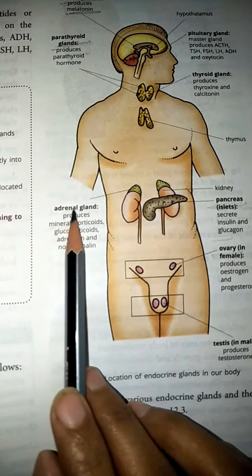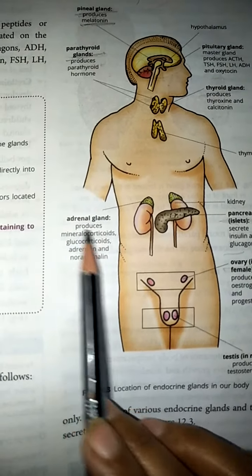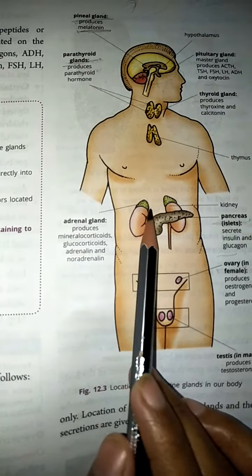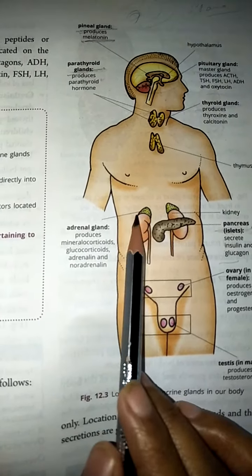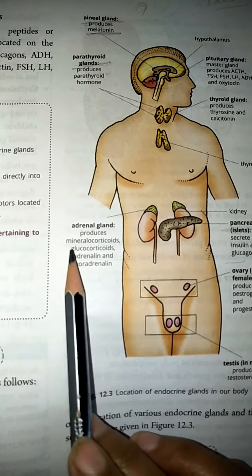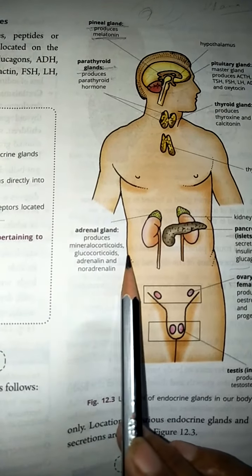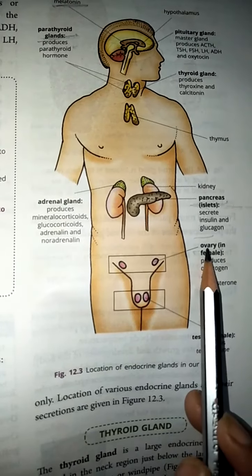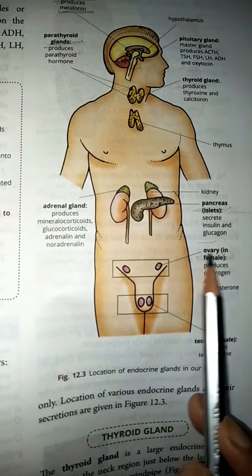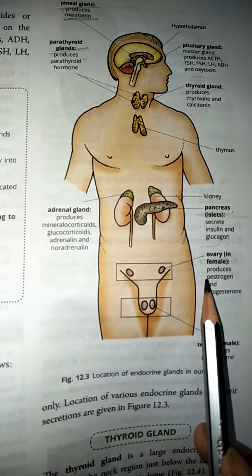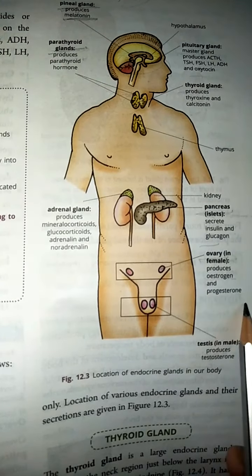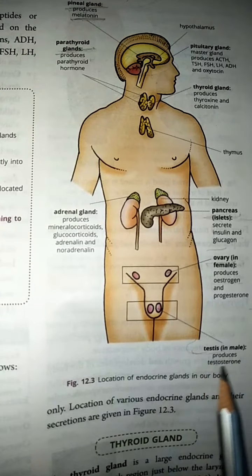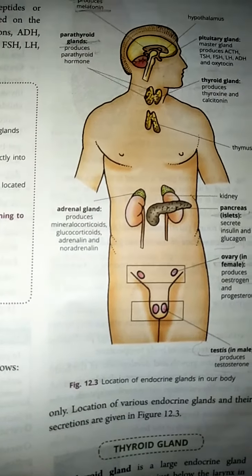The adrenal gland is located above the kidney — it has a cap-like structure on the kidney. This gland produces mineral corticoids, glucocorticoids, adrenaline, and non-adrenaline. In females, ovaries are found and they produce estrogen and progesterone. In males, testes are found and they produce testosterone.